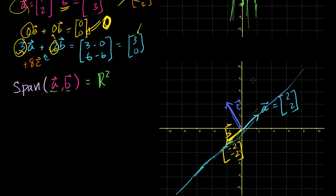So in this case the span — and I want to be clear, this is for this particular A and B, this blue A and this yellow B — the span is just this line. It's not all of R2.